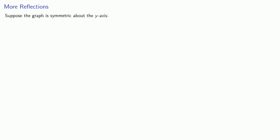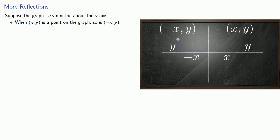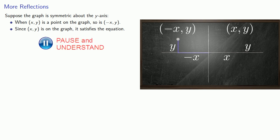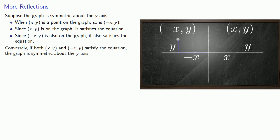Most discussion of symmetry centers around the idea of reflection symmetry. Suppose a graph is symmetric about the y-axis. Consider a point on the graph with horizontal coordinate x and vertical coordinate y. When (x, y) is a point on the graph, we can reflect across the y-axis to get another point on the graph where the horizontal coordinate is negative x and the vertical coordinate is still y, giving coordinates (-x, y). Since (x, y) is on the graph it satisfies the equation, and since (-x, y) is also on the graph it also satisfies the equation. Conversely, if both (x, y) and (-x, y) satisfy the equation, the graph is symmetric about the y-axis.